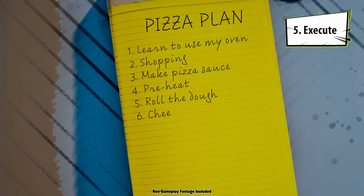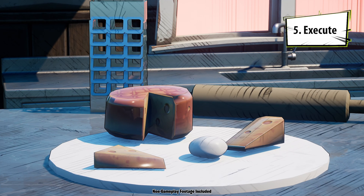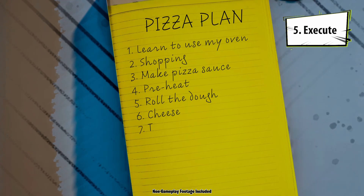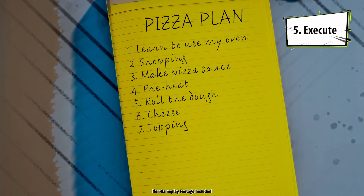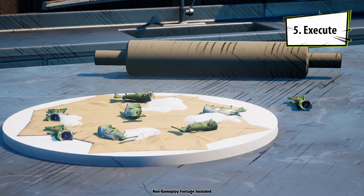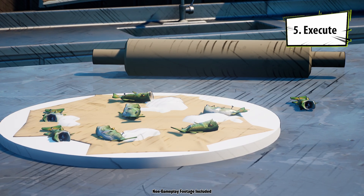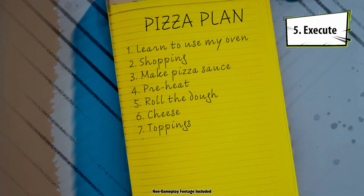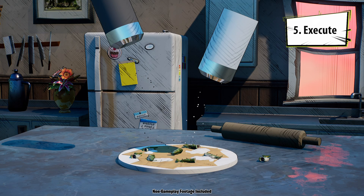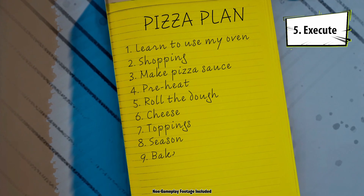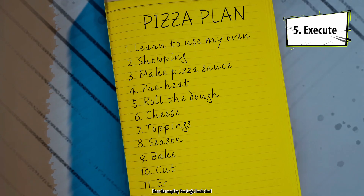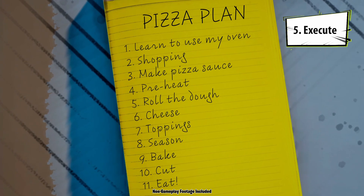Six: dump on lots of cheese. Seven: add the toppings I want — controversial, but I love an anchovy. Eight: season. Nine: bake. Ten: cut. Eleven: eat.